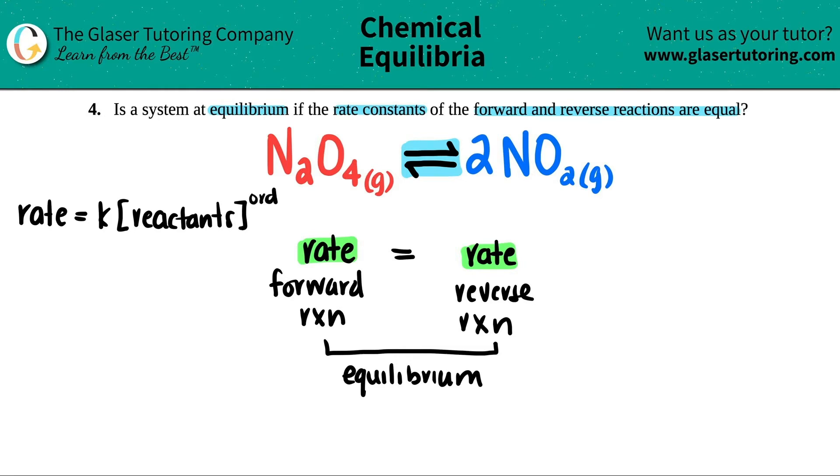Remember this from when you did rates, probably in the chapter before this. There is a link between rate and K, which is the rate constant. A rate constant is the lowercase K.